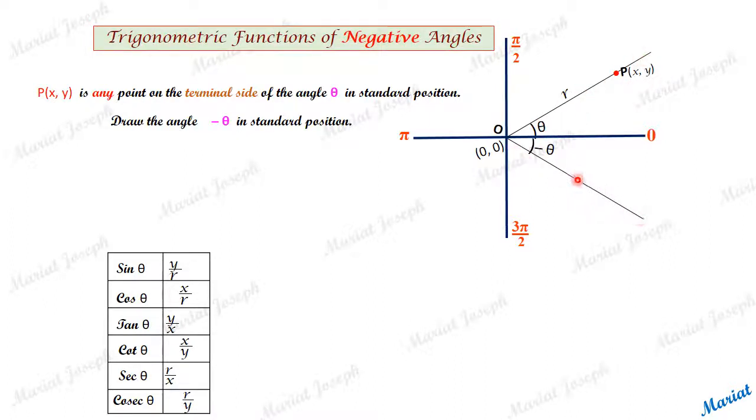So conveniently I am going to take a point on the terminal side by drawing a perpendicular from P to meet the new terminal side at Q.